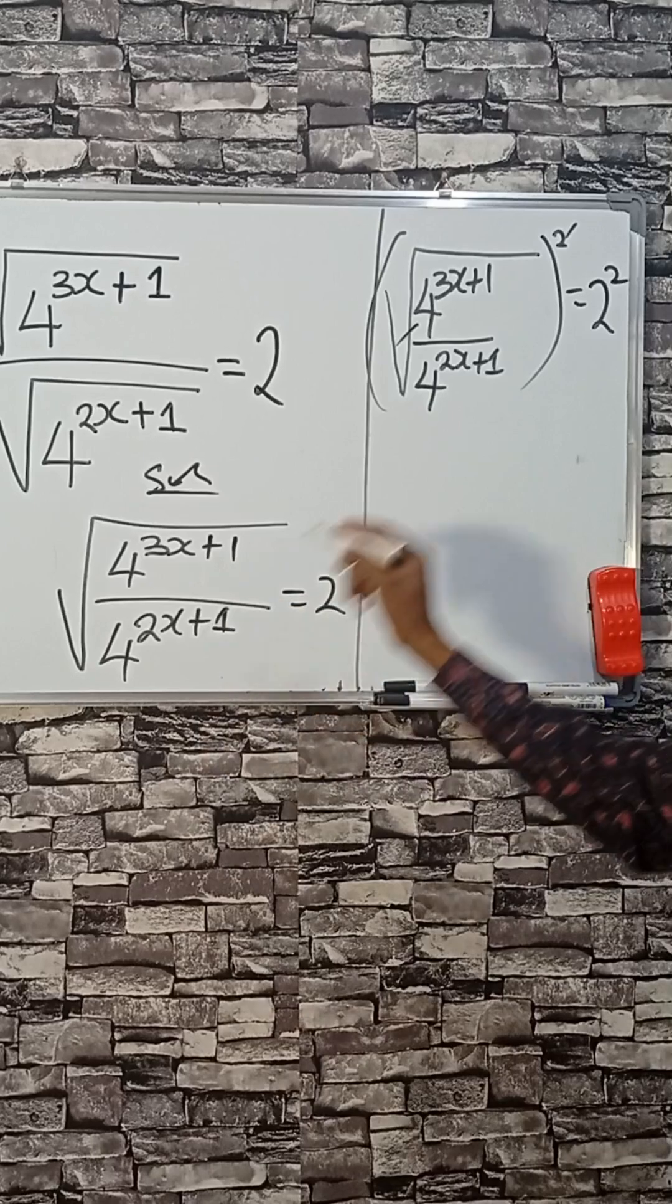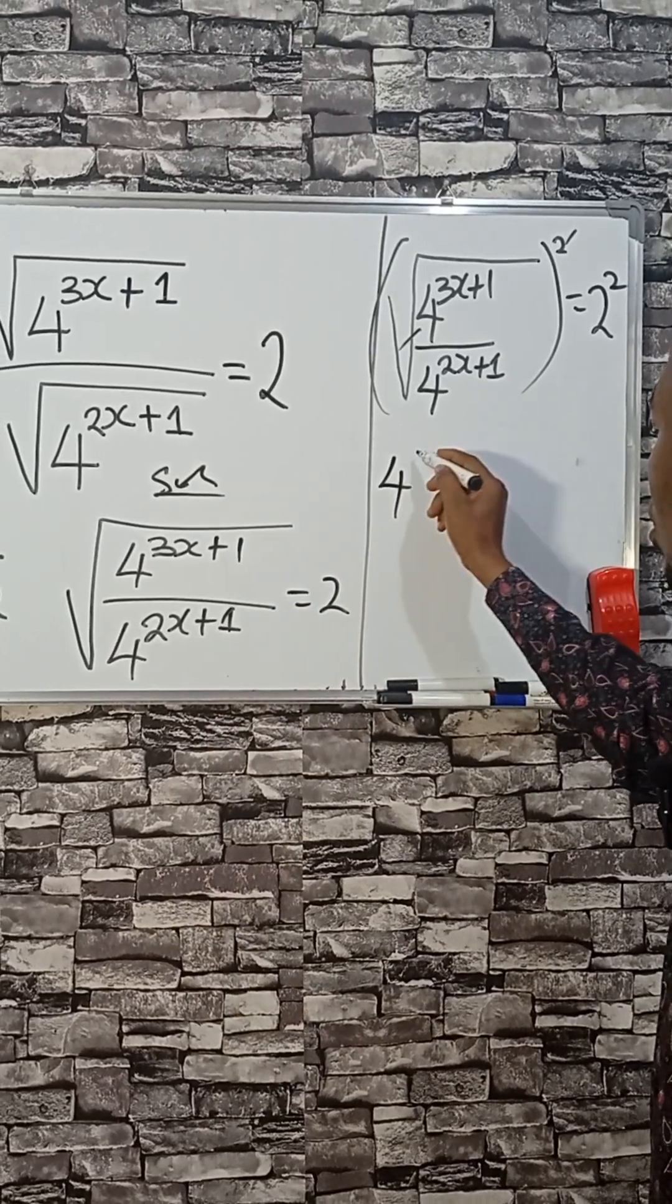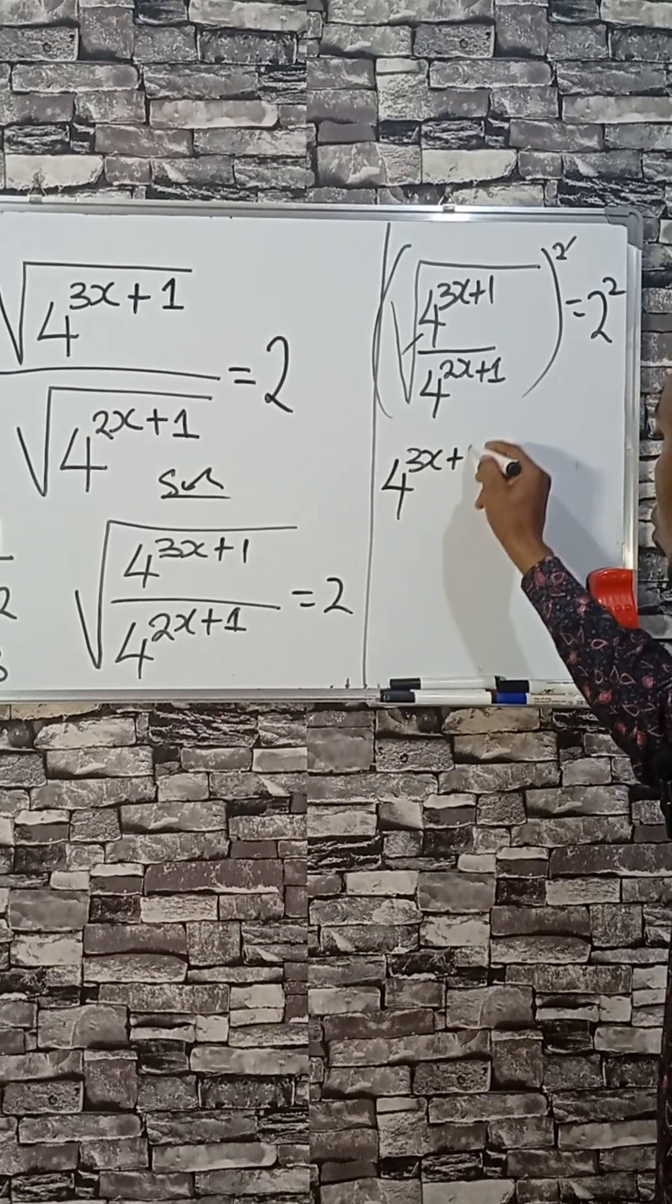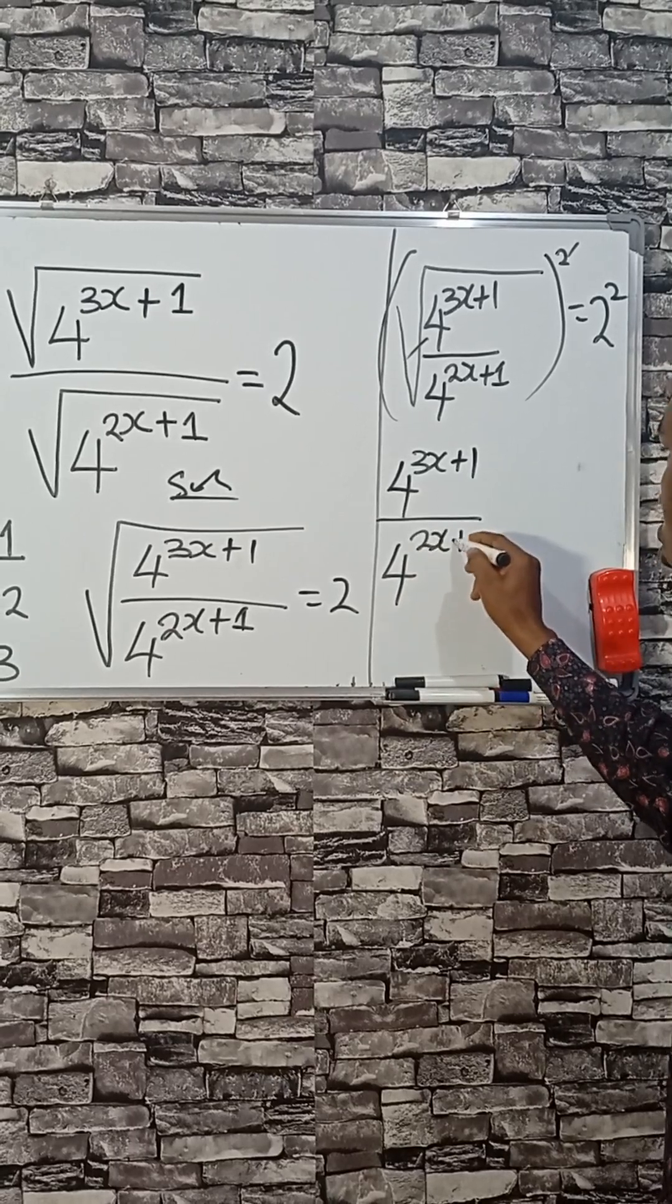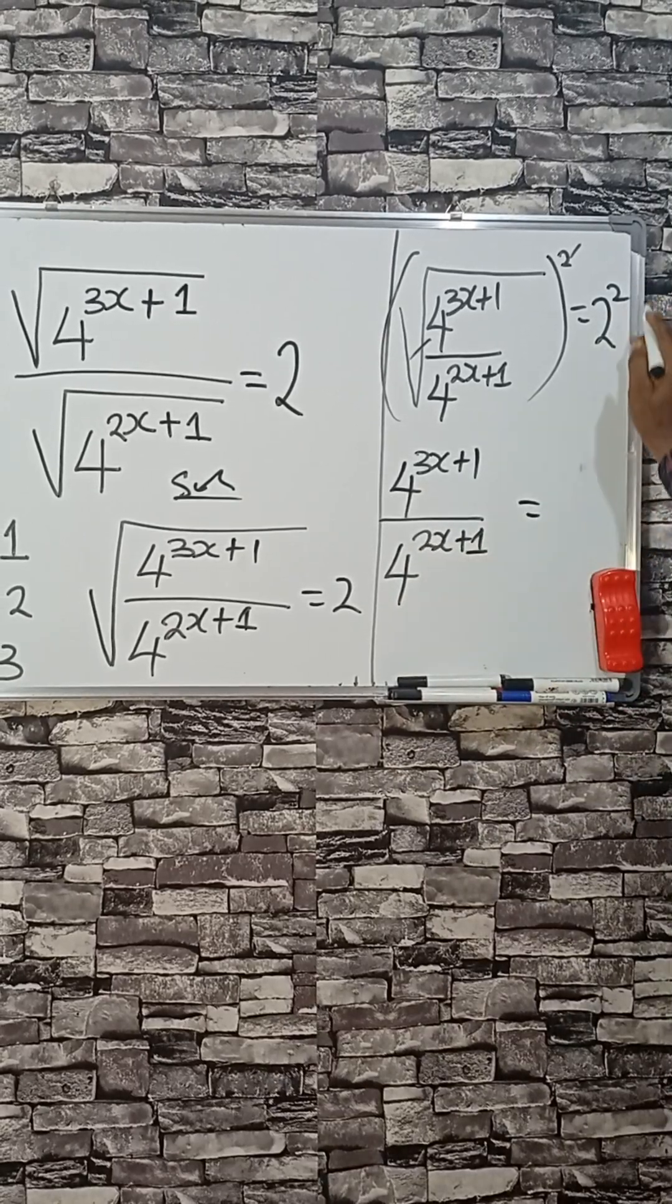This and this will go. So, that's giving us 4 raised to the power 3x plus 1 divided by 4 raised to the power 2x plus 1. And then this is equal to 4.